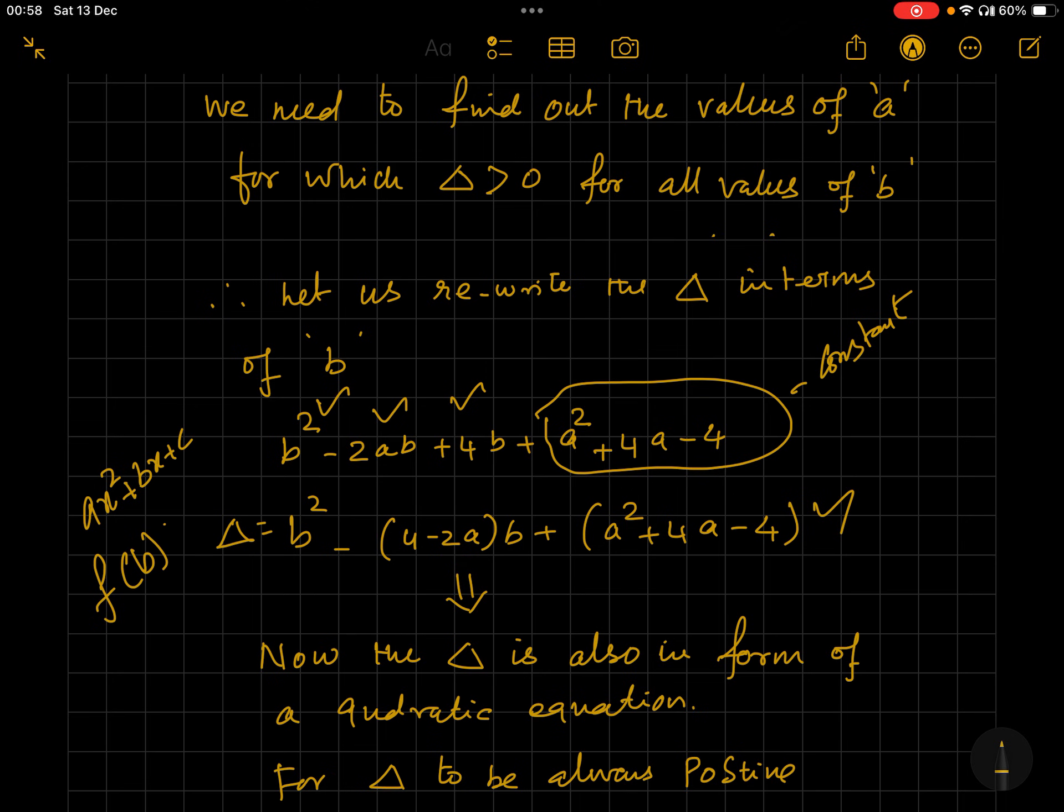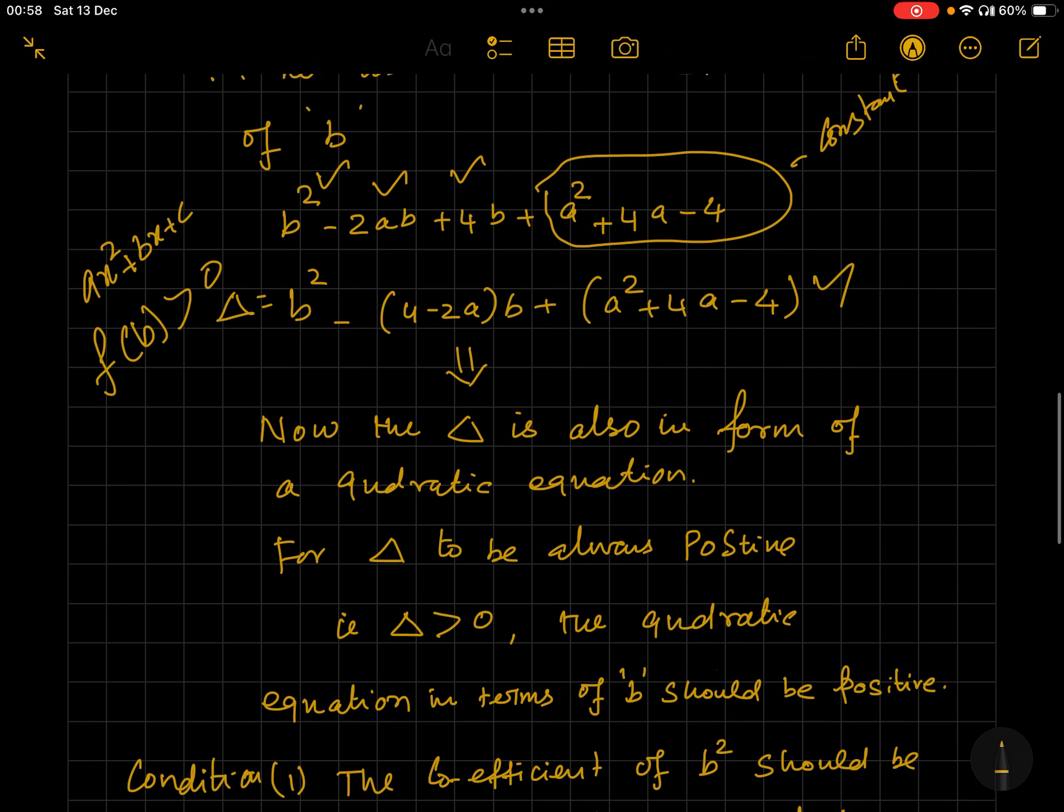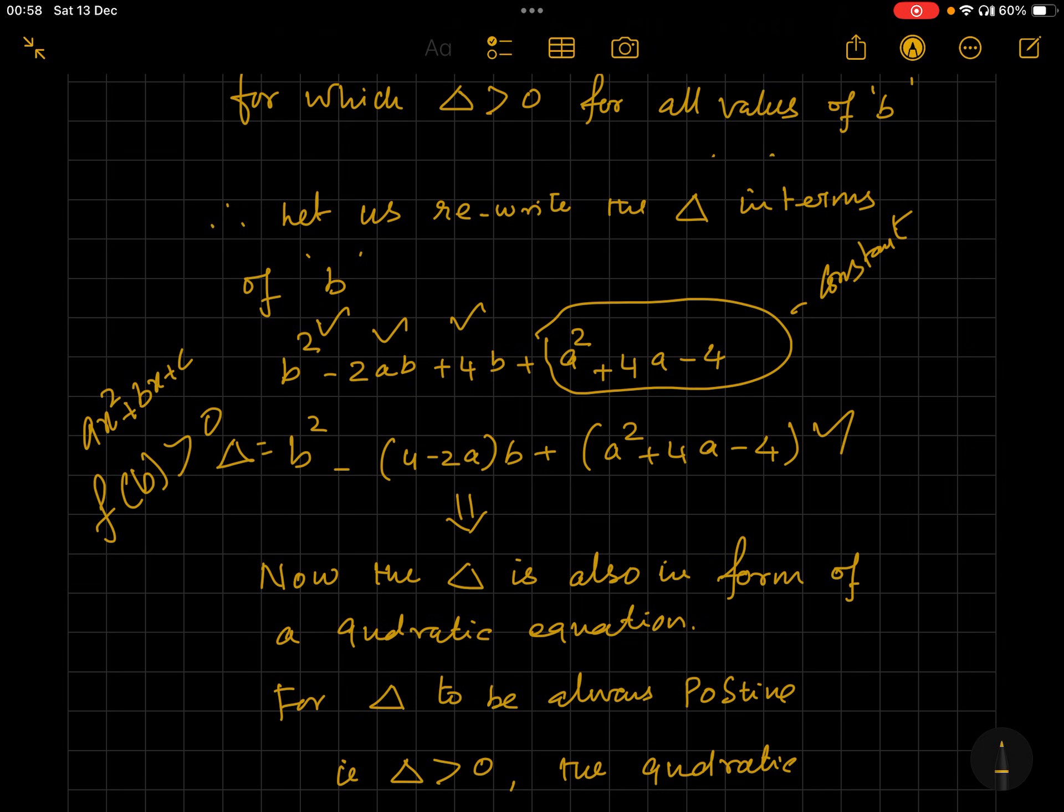of b, a function of b always greater than zero. The real twist: for a quadratic expression to be always greater than zero, there are two conditions. For ax² + bx + c, the coefficient of x² (that is a) should be positive, and delta should be less than zero - the discriminant should be negative. How intelligent and twisting it is! In the first part we have delta is greater